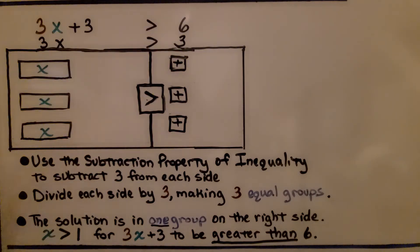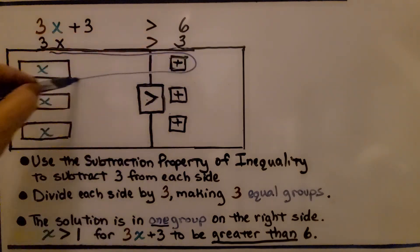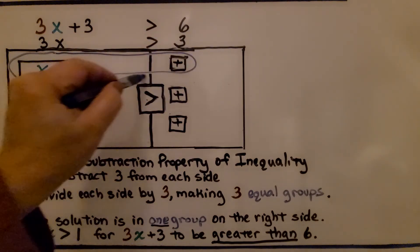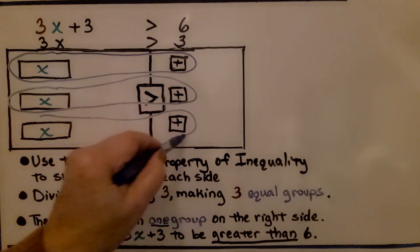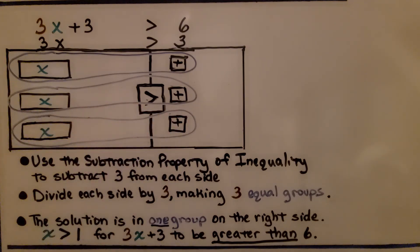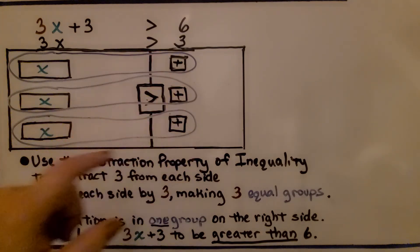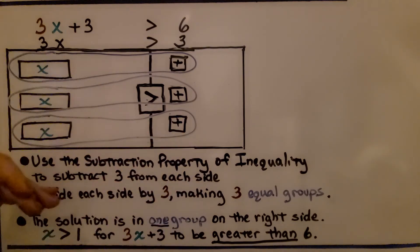Now, because we have a positive 3 here, we divide each side by 3 by making 3 equal groups. We have 1, 2, let's ignore the sign in the middle for now, and 3. We have 3 equal groups. They have the same tiles in them. We have a rectangle and a square in each group. 3 equal groups.